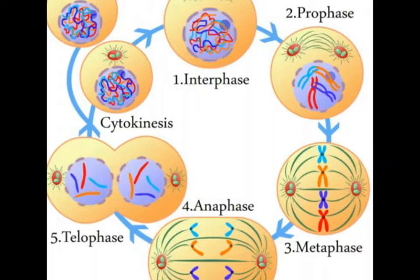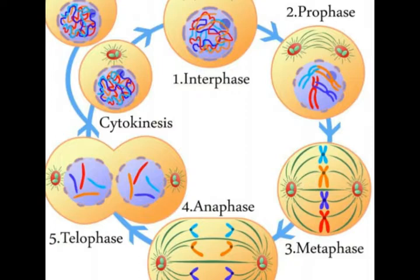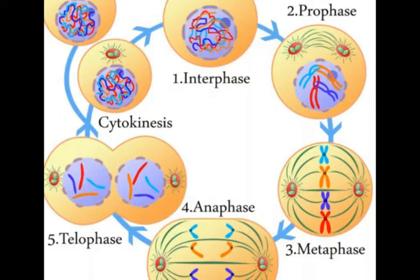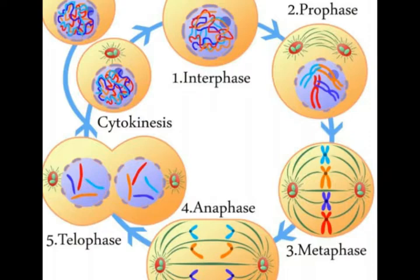Once the gamma-tubulin ring complex is formed, polymerization can occur using it as a platform. The gamma form of the protein is usually found in a cell organelle known as the centrosome, which is a microtubule organizing center (MTOC).